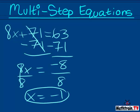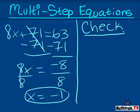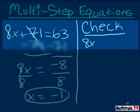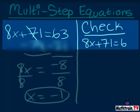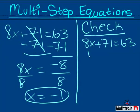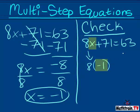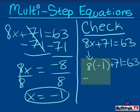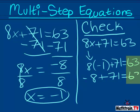Now, like all good students should, we're going to do a check. We're going to draw a line to separate, and write the word check and underline it. For the check, we're going to write the problem: 8x plus 71 equals 63. Then we bring it down: 8 times negative 1, plus 71 equals 63. Negative 8 plus 71 equals 63. 63 equals 63 — and we're going to give that a big old check.